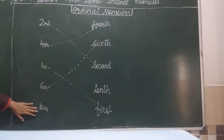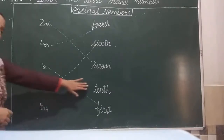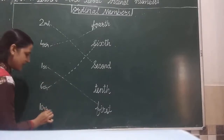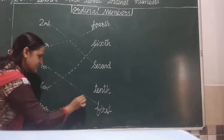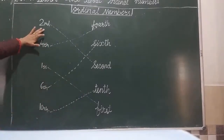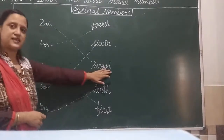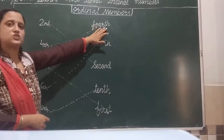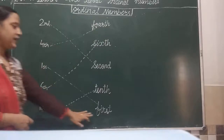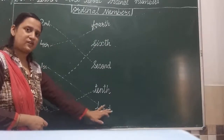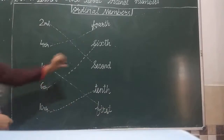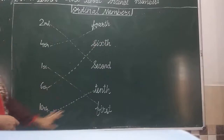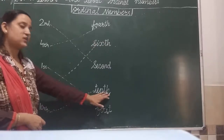Next: tenth. T-E-N-T-H. Here it is. So we will match this with its spelling. Tenth. The spelling of second is S-E-C-O-N-D. Second. Fourth: F-O-U-R-T-H. Fourth. First: F-I-R-S-T. First. Sixth: S-I-X-T-H. Sixth. Tenth: T-E-N-T-H. Tenth. Clear students?